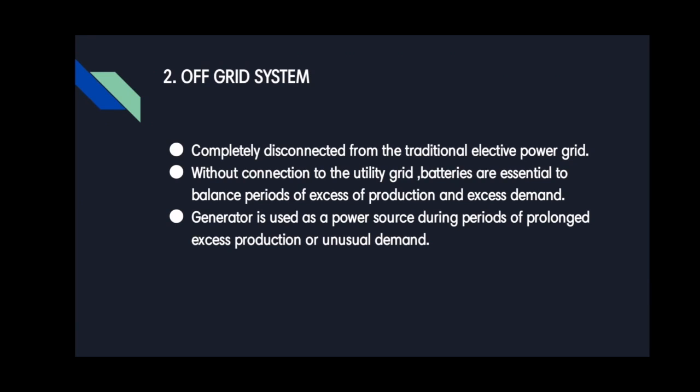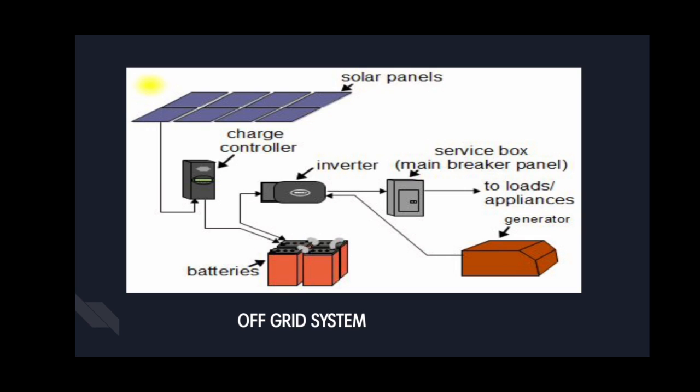The off-grid system is completely disconnected from the traditional electric power grid. Without connection to the utility grid, batteries are essential to balance periods of excess production and excess demand. To protect against supply-demand imbalance of power, when the solar system is underproducing and the batteries are discharged,